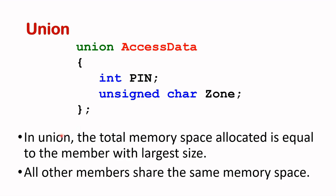For union, the total memory space allocated is equal to the member with the largest size. So pin is 16 bits — two bytes — and zone is eight bits — one byte. So the total memory allocated to this union type would be two bytes. All members, that is pin and zone, will share the same memory space.